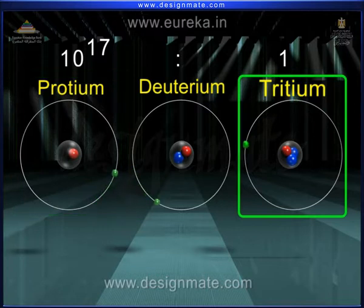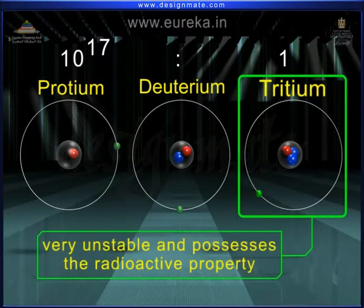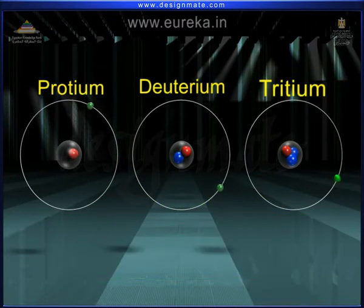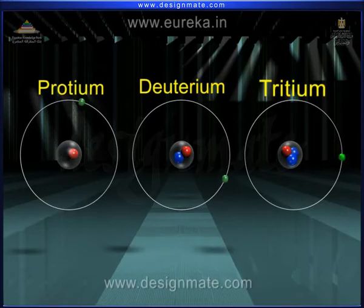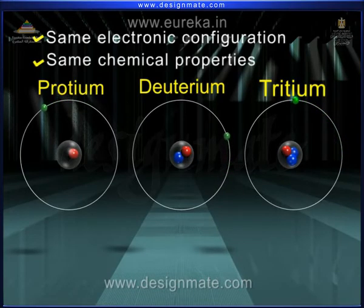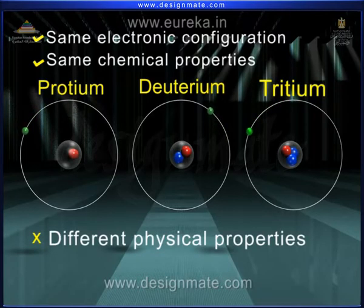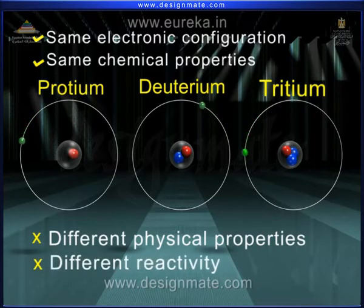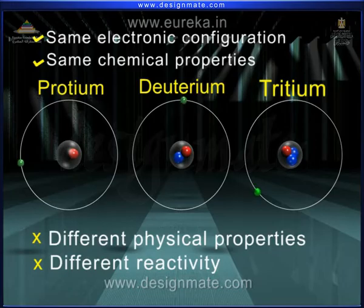Tritium is very unstable and it possesses the radioactive property. These three isotopes have the same electronic configuration and therefore their chemical properties are the same. But their physical properties and the reactivity of their chemical reactions are different.